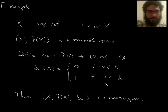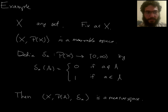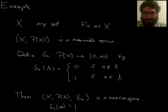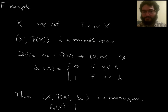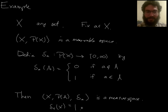By the way, the Dirac Delta measure — where X is any set, you fix a point a, and define the measure accordingly — is also a probability measure, because the measure of the entire space is 1 (since little a is contained in X). What would this represent? Maybe I'm thinking of a random point in the set, and the measure gives the chance that the point I'm thinking of is in any given subset. Here the chance is 100% if the set contains little a, and 0% otherwise — representing a situation where I always pick the same point, little a, with certainty.